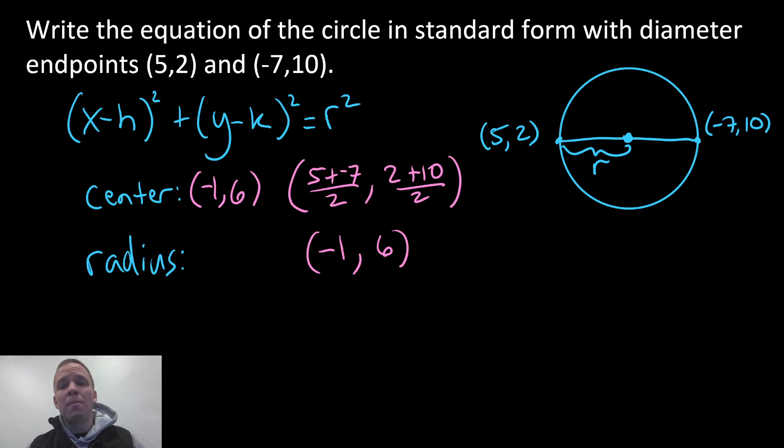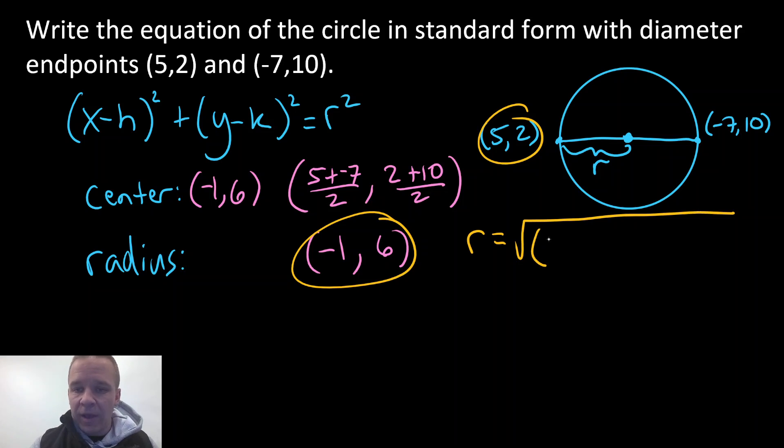Now I need my radius. So my radius is gonna equal the square root of, and I'm gonna have this one and that one. I'm gonna use those two, right? You could use the (-7,10). I'm just avoiding a negative number if possible. So I have my two x values,